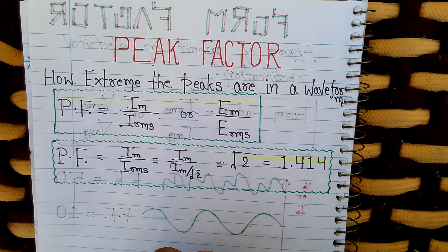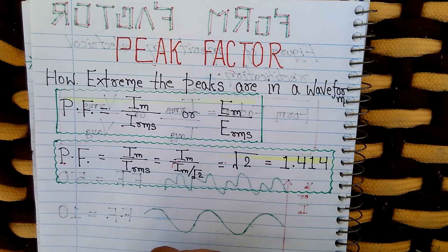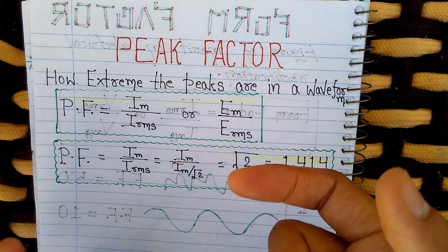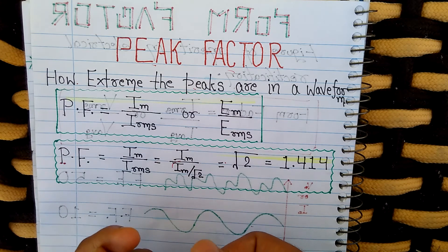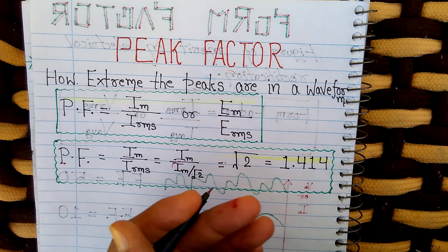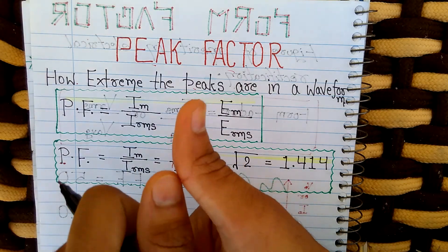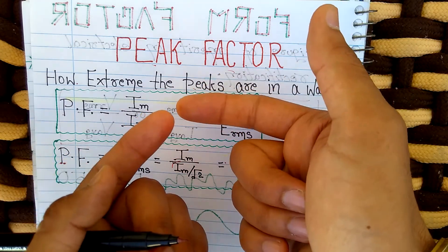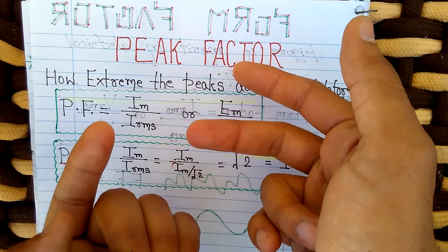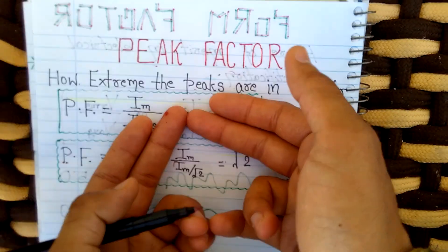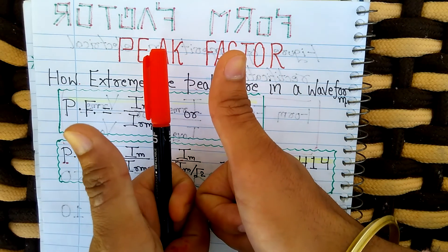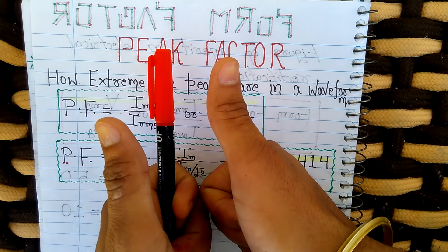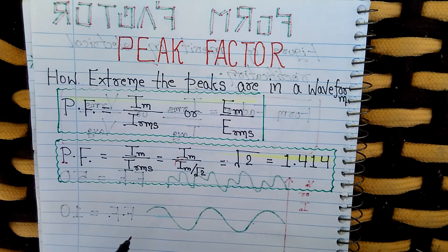So we have understood two factors: form factor, which tells you about the shape of the waveform after rectification — closer to 1 means smoother, higher value means more ripples — and peak factor, which tells you about the peaks in a waveform. I hope you have understood these concepts. Please give a thumbs up, hit the bell icon, and subscribe to the channel.